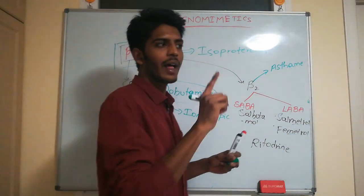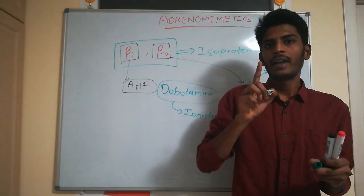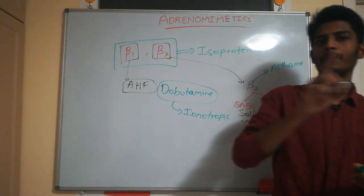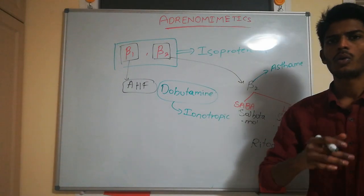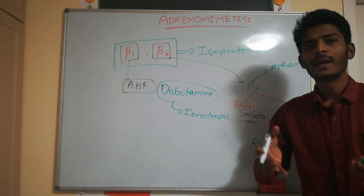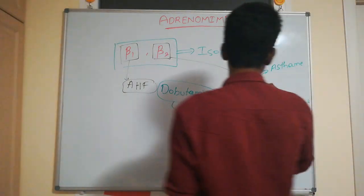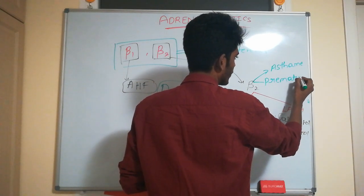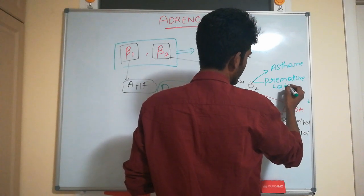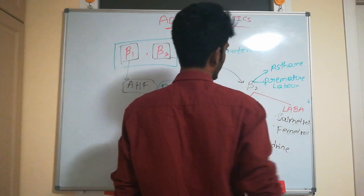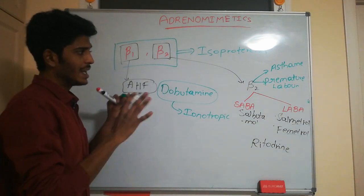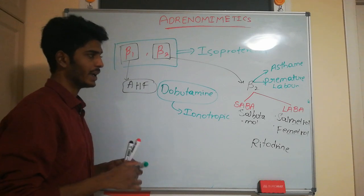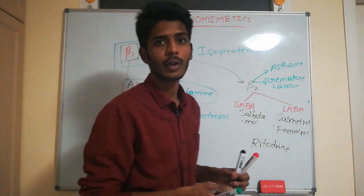Beta 2 receptors are also present in the uterus. Stimulation of beta 2 receptors in the uterus causes relaxation, so beta 2 agonists like ritodrine are used in the treatment of premature labour. These are the important pharmacological effects of adrenomimetics.